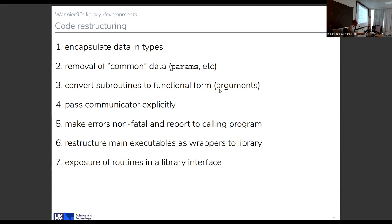Wannier90 now runs more or less exclusively as functions that are more or less pure — given the same arguments, they will always return the same results. For a library, that's tremendously useful. We also now pass the MPI communicator throughout the code, so the whole code is now parallel. That doesn't mean all parts can use parallelism effectively, and we haven't changed the parallelization strategy, but all subroutines could now be made parallel if one wanted to.